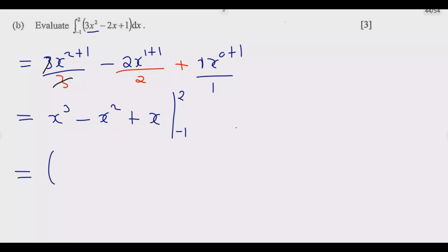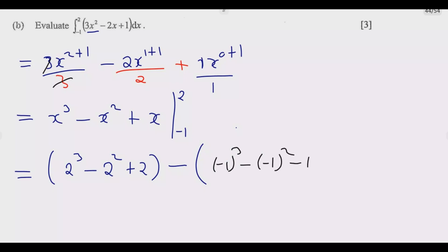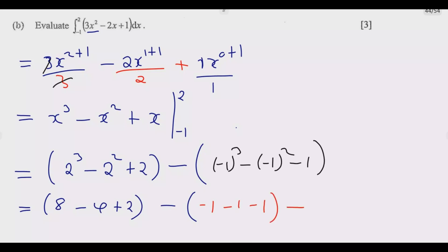Substituting the upper limit x = 2: (2³ - 2² + 2) = 8 - 4 + 2 = 6. Substituting the lower limit x = -1: ((-1)³ - (-1)² + (-1)) = -1 - 1 - 1 = -3. The definite integral equals 6 - (-3) = 9. So the answer is 9. Once you do this, you are good to go and you get the 12 marks.